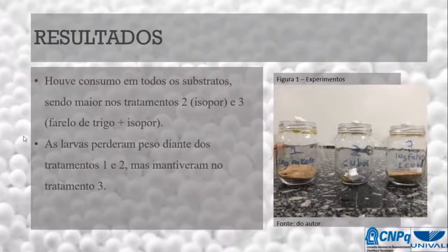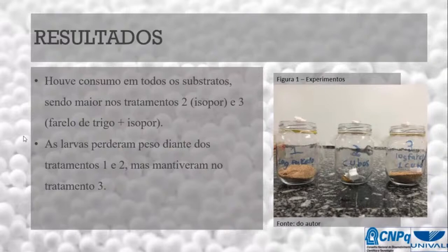Os resultados mostraram consumo em todos os substratos, sendo maior no tratamento 2 (isopor) e no tratamento 3 (farelo de trigo com isopor). As larvas perderam peso nos tratamentos 1 e 2, mas mantiveram o peso no tratamento 3. A tabela apresenta o consumo alimentar e ganho de peso das larvas de Tenebrio molitor em diferentes tratamentos.